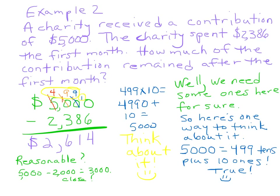We can also look at this and ask: is this a reasonable answer? We have 5,000, already rounded. We have 2,386, which we can round to 2,000. 5,000 minus 2,000 is 3,000. Is that close to 2,614? Yes, because you could round 2,614 to 3,000, so you're right in the ballpark.